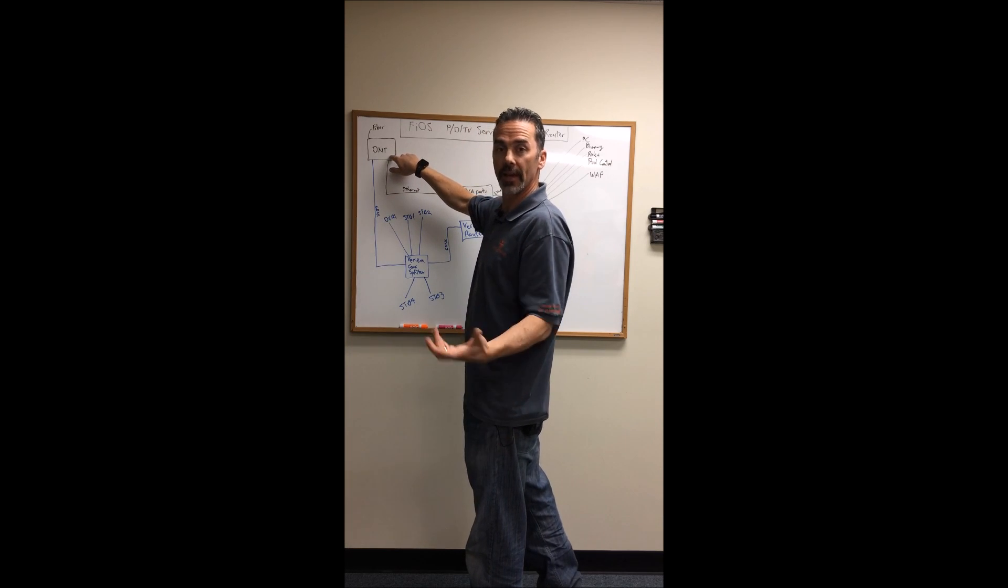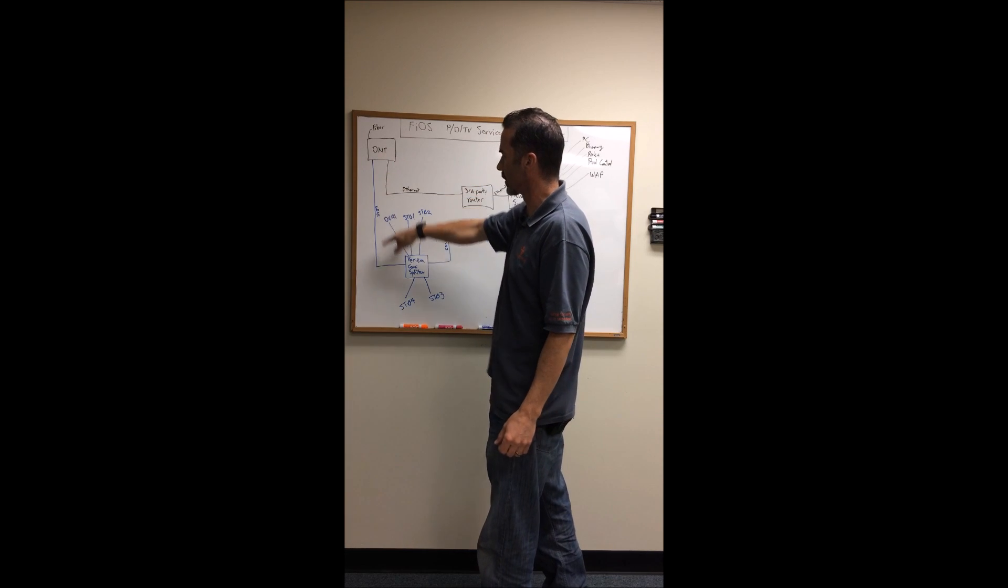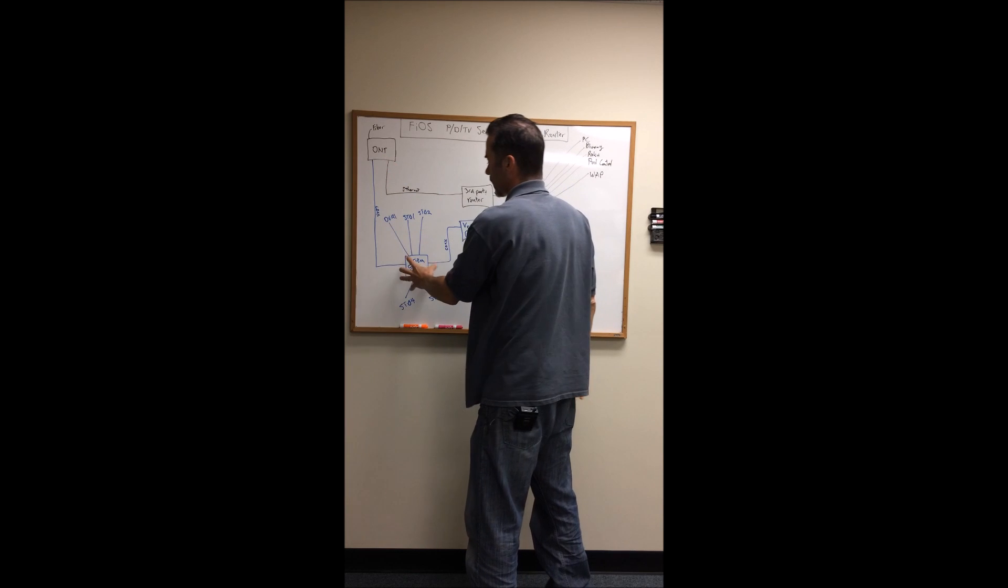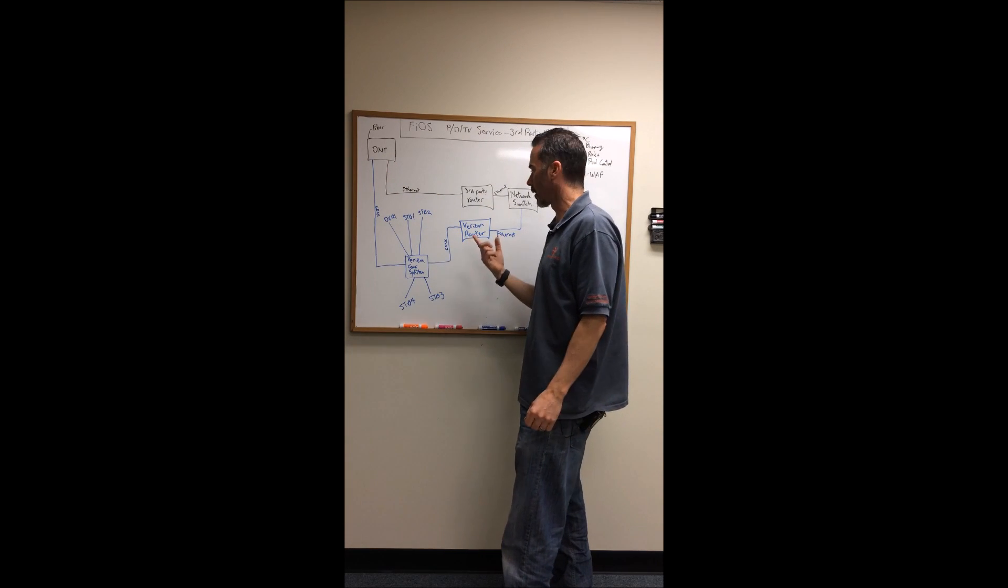One is going to be a TV coax output and the other is going to be a computer output. The computer output in your standard install is disabled by default and there's just going to be this coax coming out.